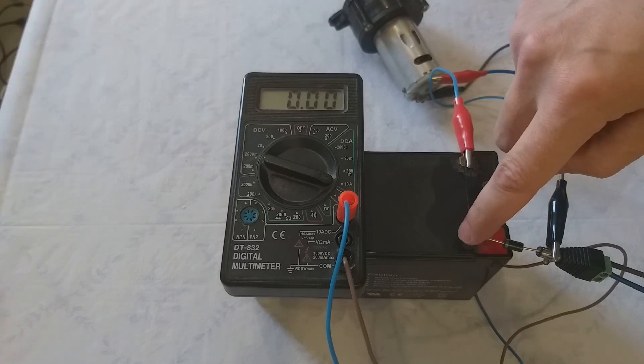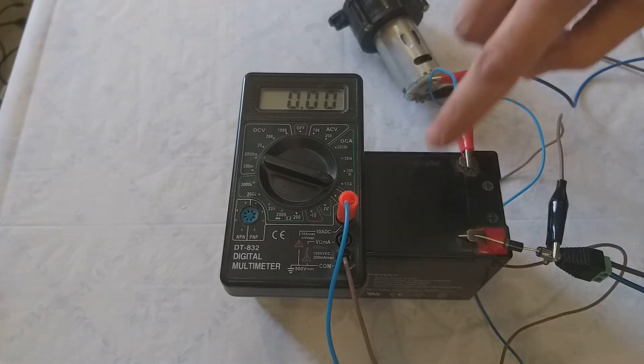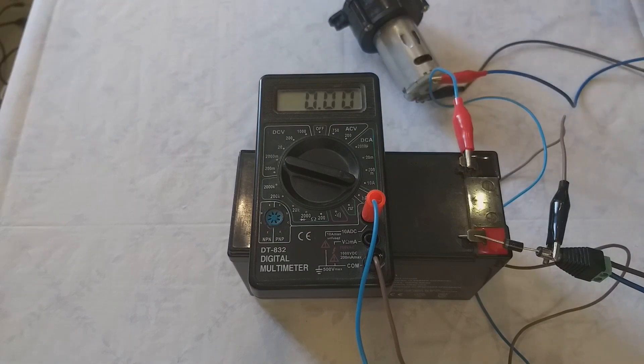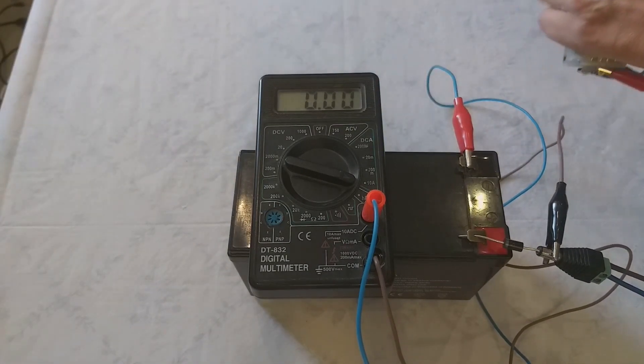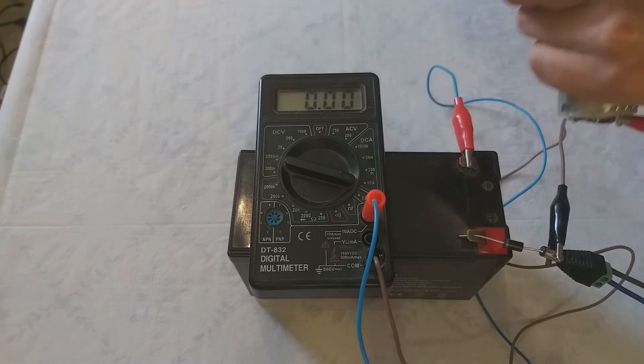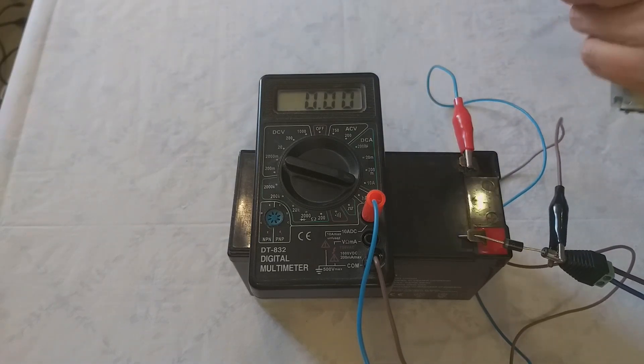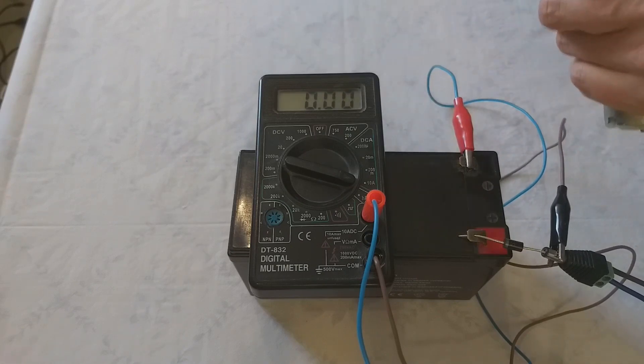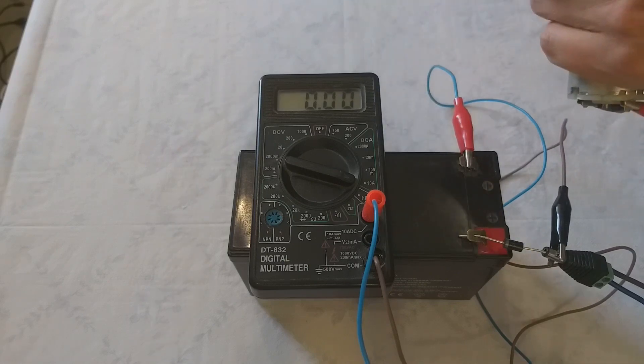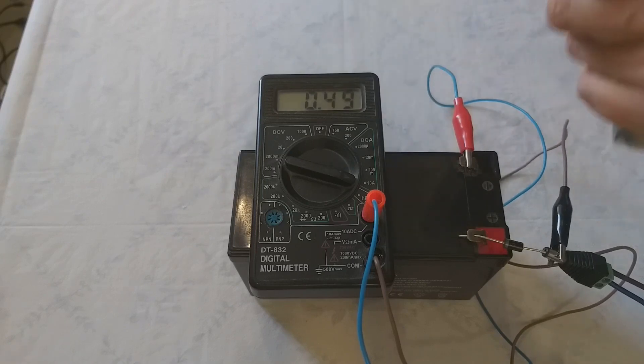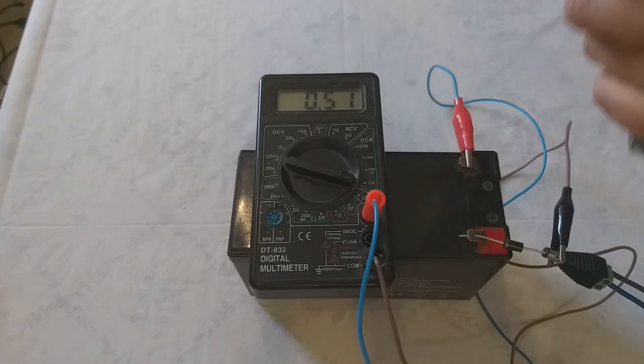Connected the tester and measured the current. The handle rotates easily at first. Once the generator voltage is more than the battery, it begins to generate current. Current is 1 to 3 amps, but the handle is very hard to turn.